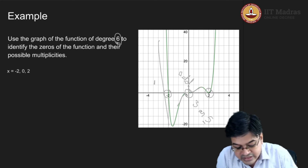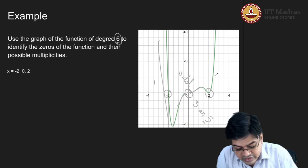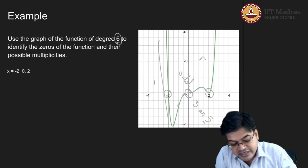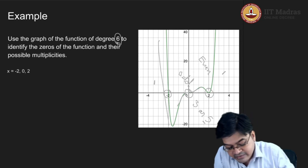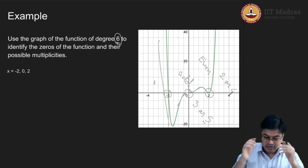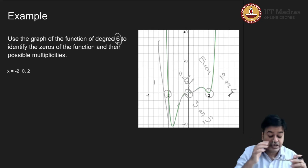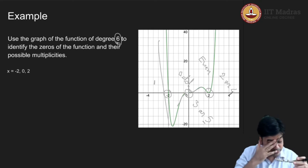Looking at x equals 2, the graph actually bounces off the x-axis — this is a typical trait of an even degree polynomial. So the multiplicity there can be 2 or 4.